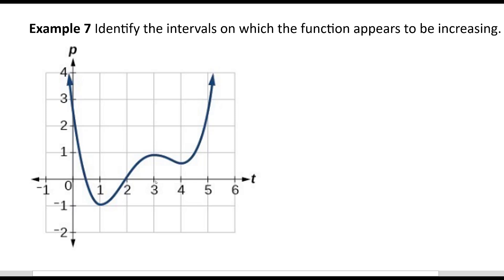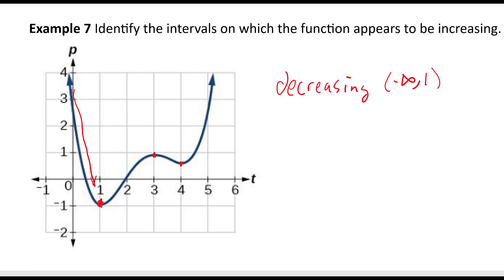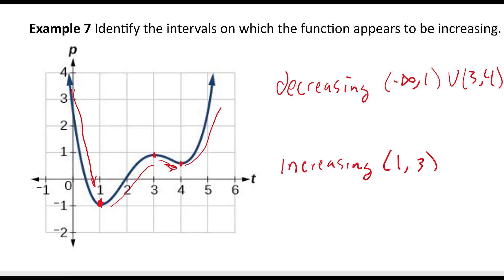For this example, we identify the intervals on which the function appears to be increasing. Things change at certain x-values. It looks like it's going down as you go to the right, so decreasing occurs from negative infinity up to 1. Then it seems to be increasing from 1 to 3, where it peaks out and starts going down. Then it's decreasing again from 3 to 4. Then it increases again from 4 to infinity.